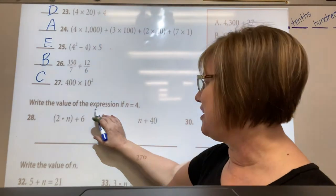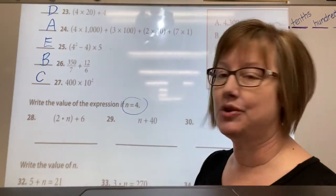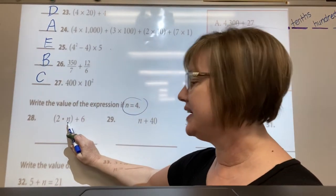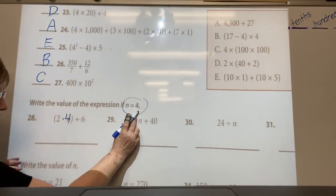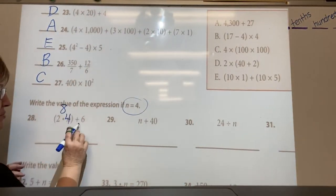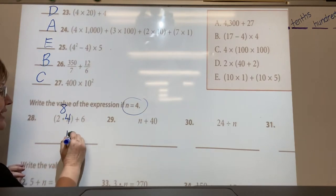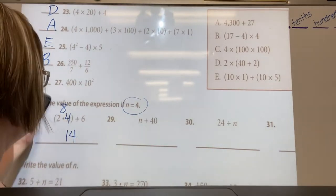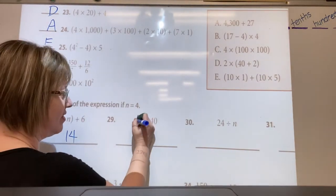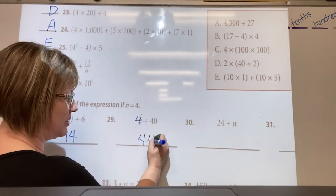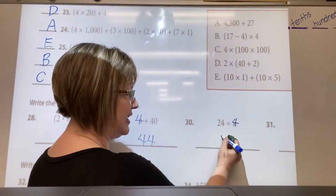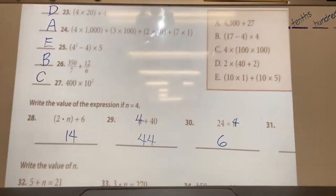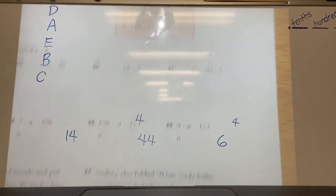All right, now write the value of the expression if n equals 4. So 2 times 4 is 8 plus 6, so 2 times 4 is 8 plus 6, 8 plus 6 is 14. Okay, n plus 40 is 44. And you see all these, 24 divided by 4 is 6, and the last one there, 31, is 7 minus 4, that's 3 times 5 is 15.